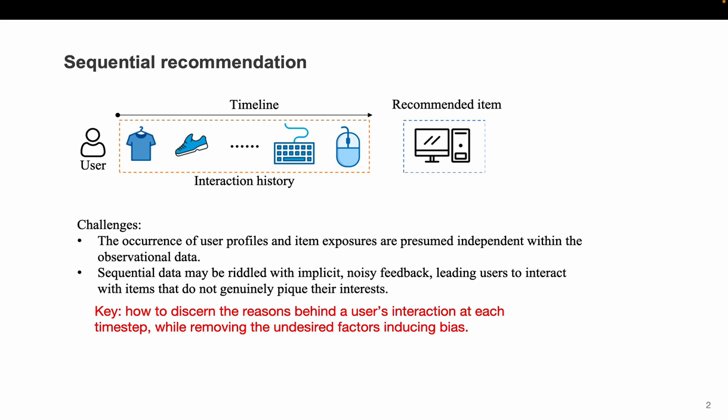Here is the problem of sequential recommendation. It generally involves predicting the user's future preference based on the user's interaction history. For each user, we typically have a sequence of historical click items which are ordered chronologically, and the goal is to predict the next item that the user is likely to click.